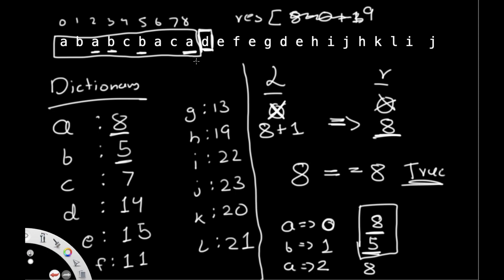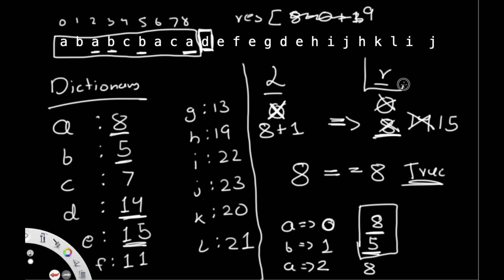For the next partition: D's last instance is at index 14, so right changes to 14. Then E's rightmost value is 15, so right updates to 15, and so on. We continue until each time the current index equals the right value, we add the partition size to our results array. At the very end we return the results array.